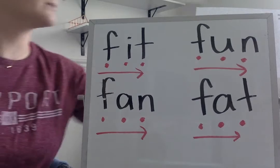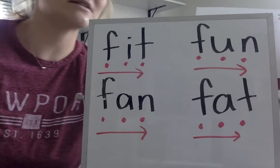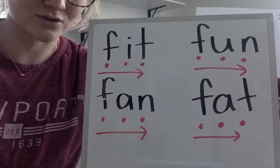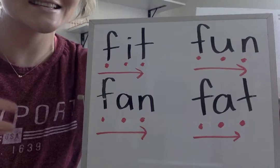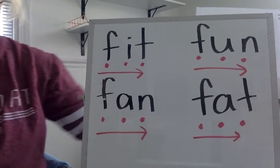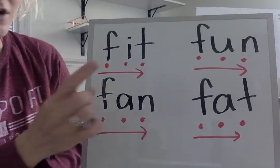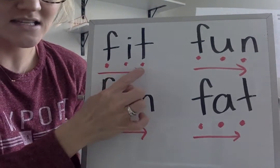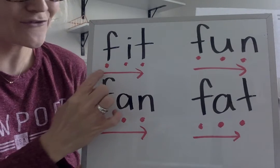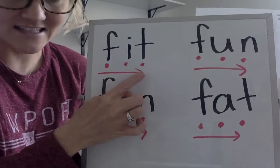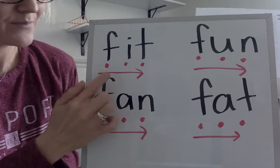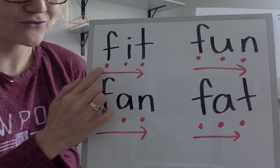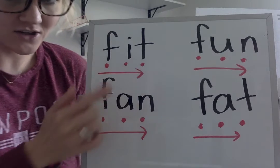So remember, if it has a red dot, that means we have to say the letter's sound — not the name, the sound — and then we'll blend them together. Ready? F... it... fit. Good, let's do it again. F... it... fit. Good.